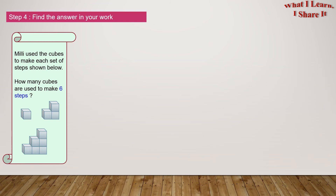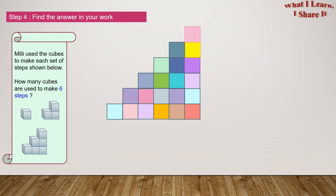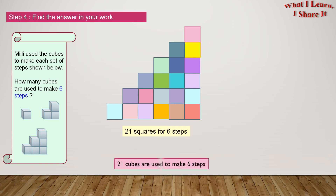Step 4: Find the answer in your work. So, there are 21 squares for 6 steps. 21 cubes are used to make 6 steps. Yay! We solved the problem!